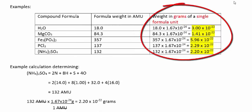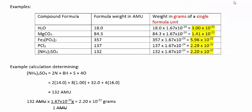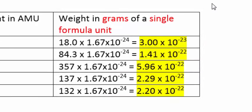I included this third column to show you the actual weight in grams of a single molecule or formula unit. To do that, multiply the weight of a single AMU, which is 1.67 times 10 to the minus 24th grams, by the AMU weight of a single molecule or unit.